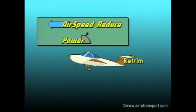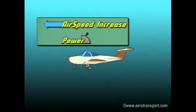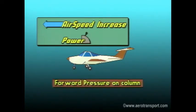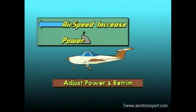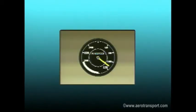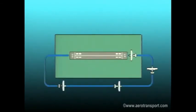Then retrim the aircraft. To increase airspeed while in straight and level flight, smoothly advance the throttle while pushing forward on the control column to maintain level flight. Keep the wings level, and once you've reached the desired airspeed, make necessary adjustments to the power setting and trim the aircraft. Increasing and decreasing airspeed while in straight and level flight will help you maintain correct spacing with other aircraft in the airport traffic circuit.